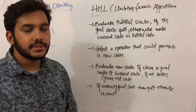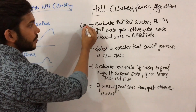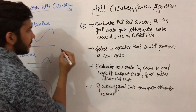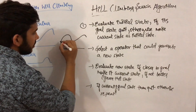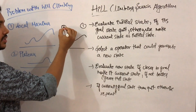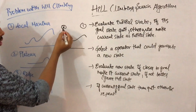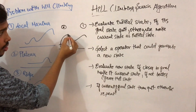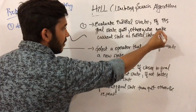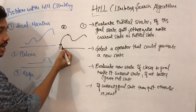The hill climbing search algorithm works in four steps. Step 1: evaluate the initial state. If it is a goal state, then quit; otherwise make the current state the initial state. Suppose there is a single element — that is the initial state. If it is already the goal state, quit. Otherwise, if you start from this point and there is a higher value, you make that the goal state and quit; otherwise make this initial state the current state.